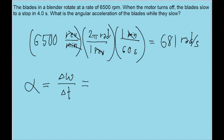In this case, the final angular velocity is going to be zero because it comes to a rest minus the initial angular velocity, which we just found, as 681 radians per second. We then divide this by the amount of time, which is given in the problem as four seconds.